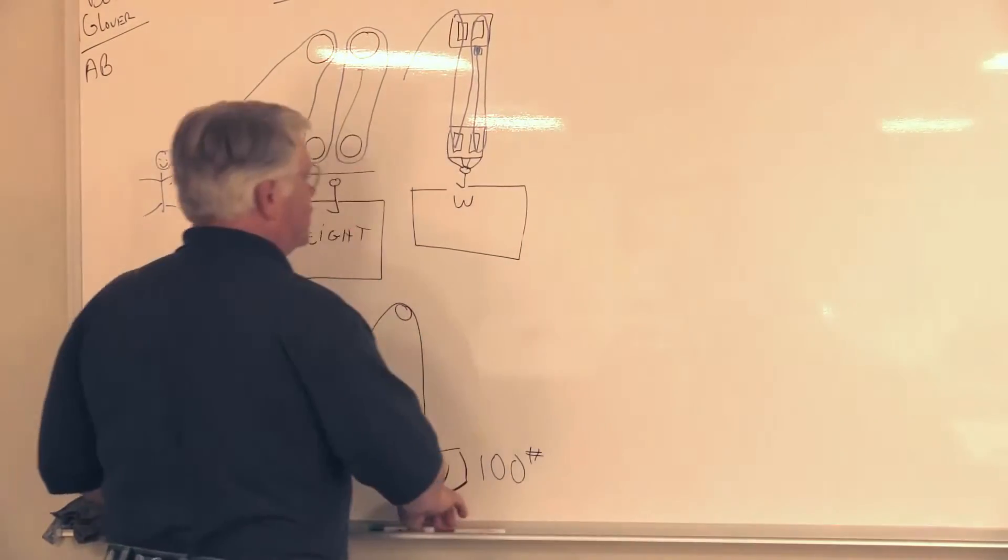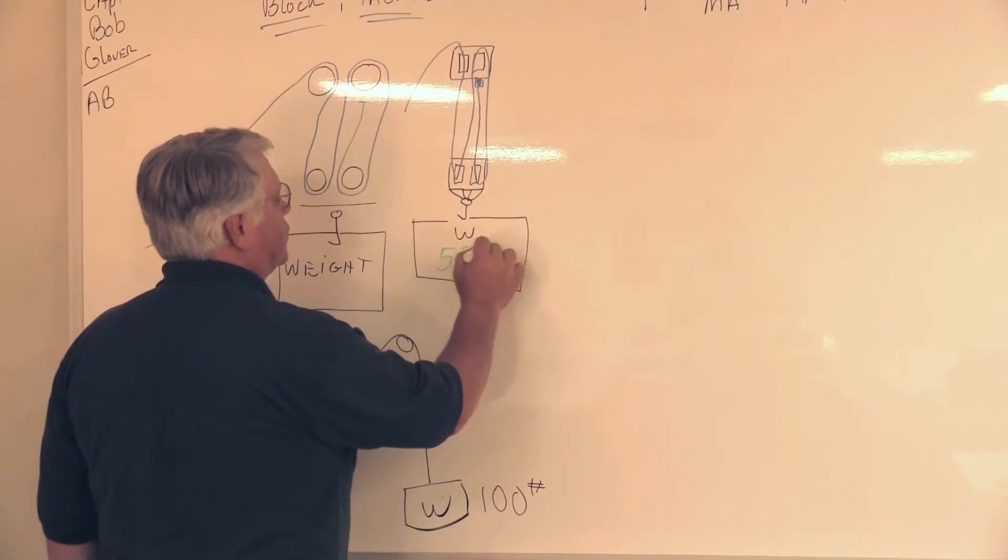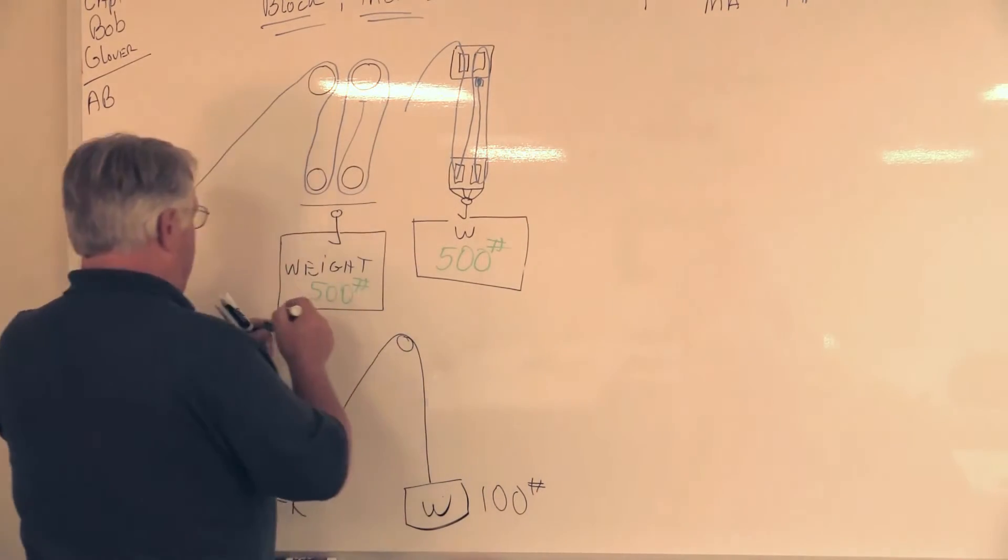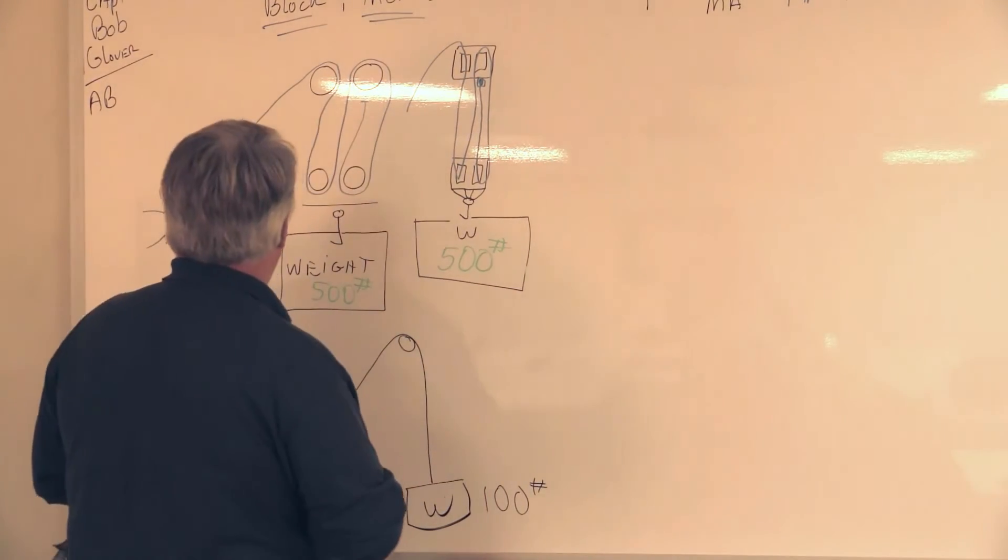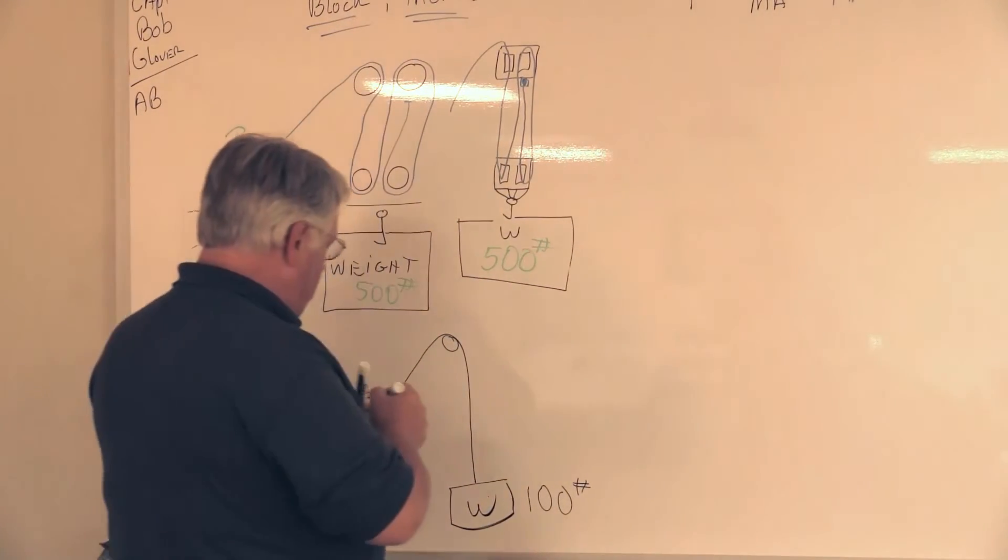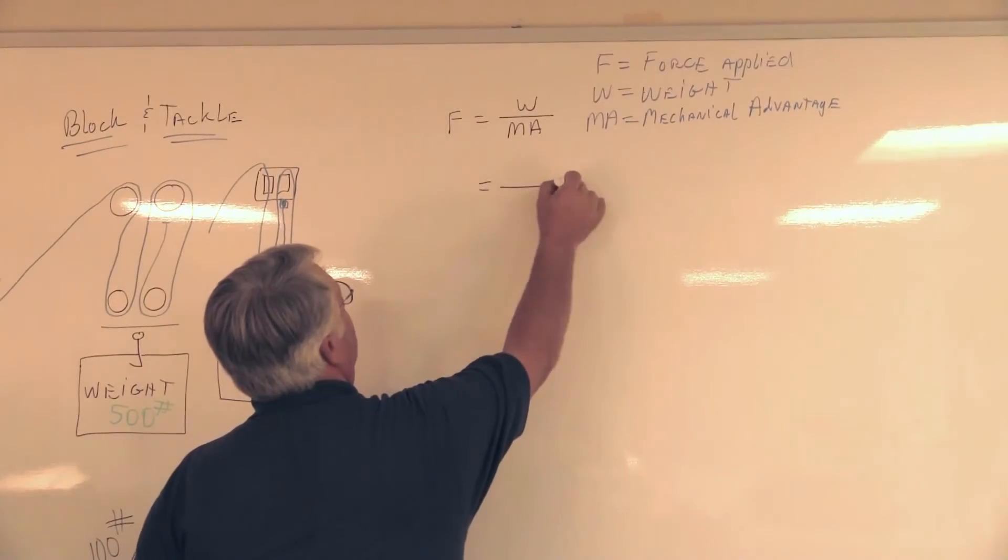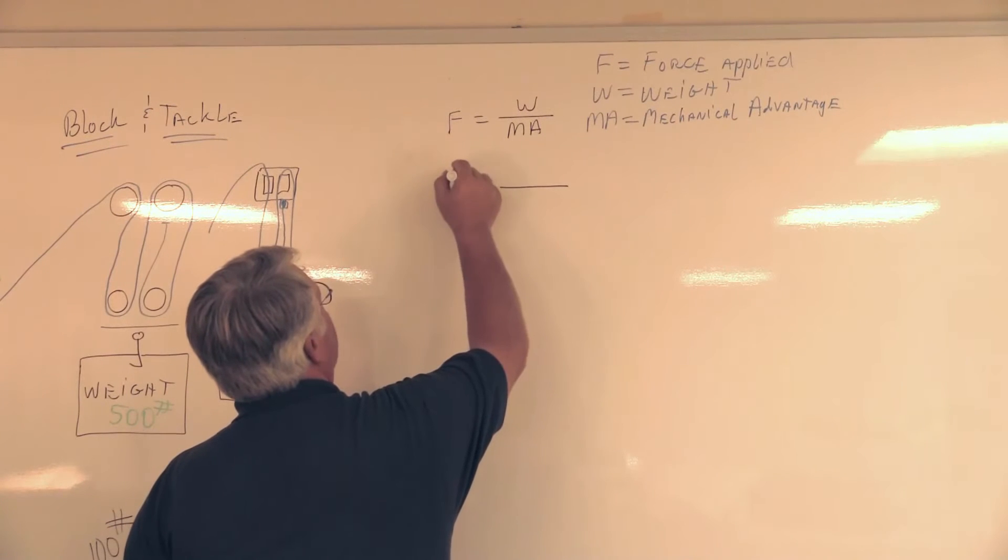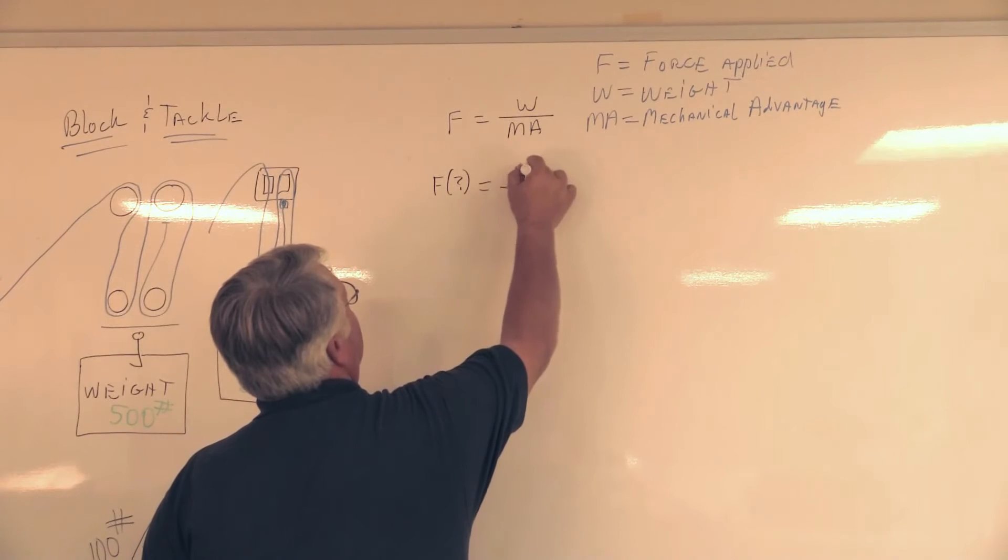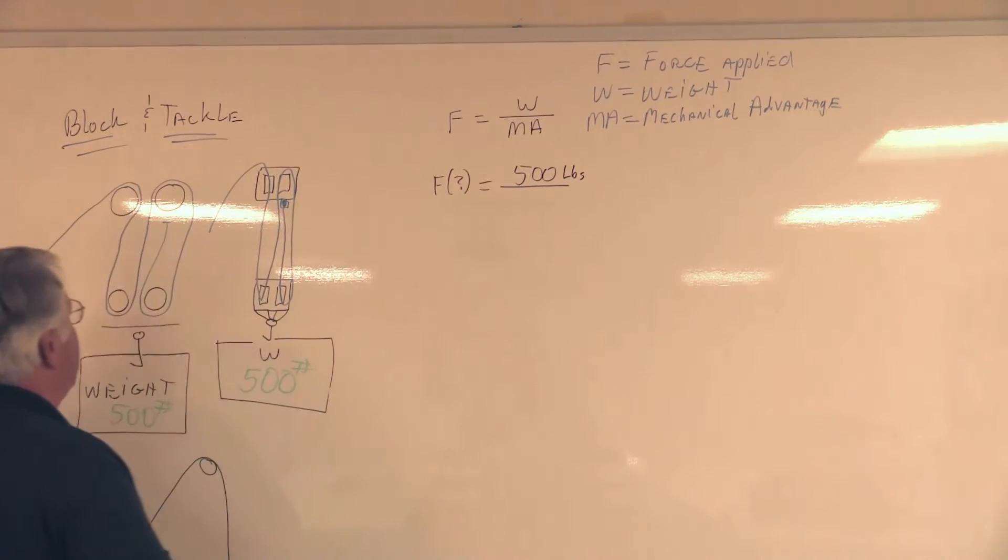Let's throw in some numbers. We're going to say that this weight that we're going to lift is 500 pounds. We are looking for what is that force. Let's go back to our formula and fill in what we know. We're looking for F. We have the weight, and that's 500 pounds. Now the next thing we need is this mechanical advantage.